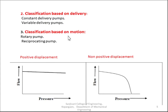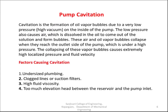One major phenomenon which occurs in pumps is called cavitation. Cavitation is the formation of a low pressure region at the inlet of the pump. These bubbles travel to the delivery line and collapse at a certain location, causing high localized pressure and fluid velocity, which leads to erosion of the piping material. Some factors that cause cavitation are: undersized plumbing, clogged lines, high fluid velocity, and too much elevation head between the reservoir and the pump inlet.